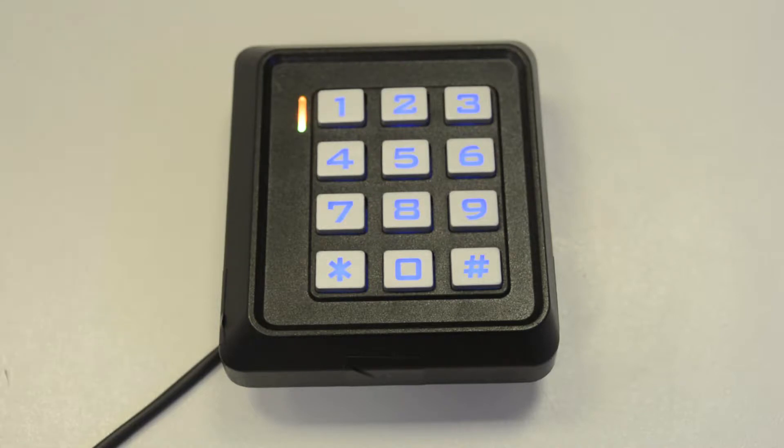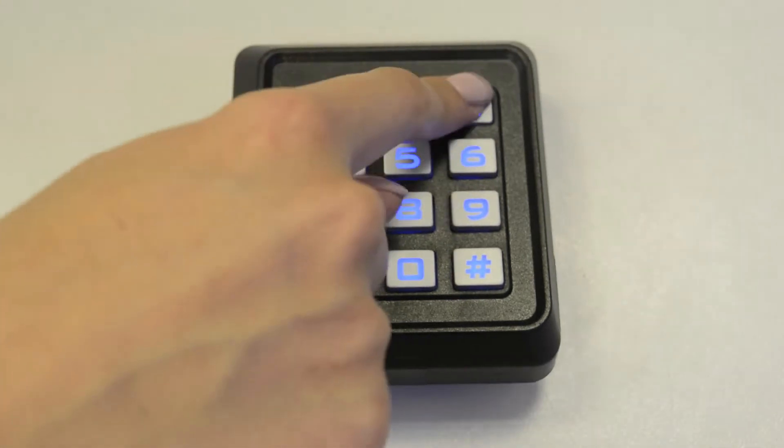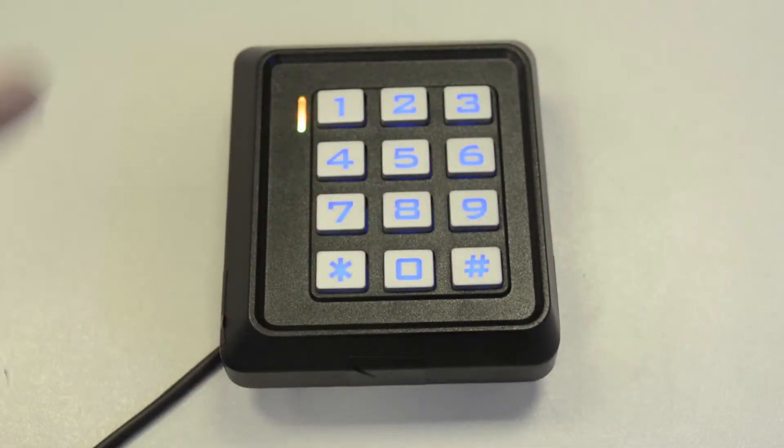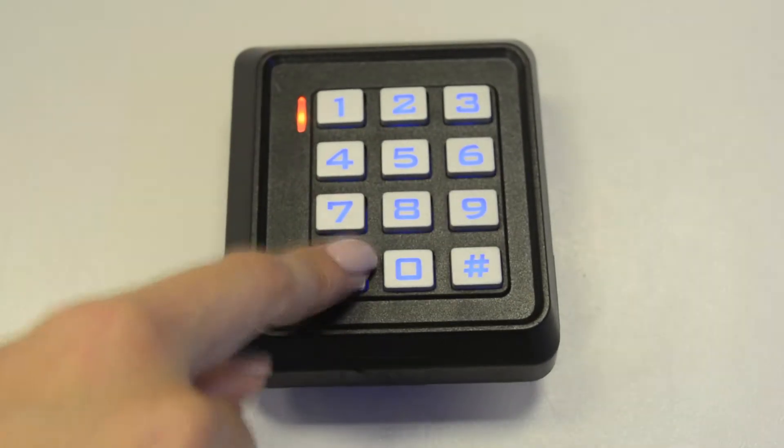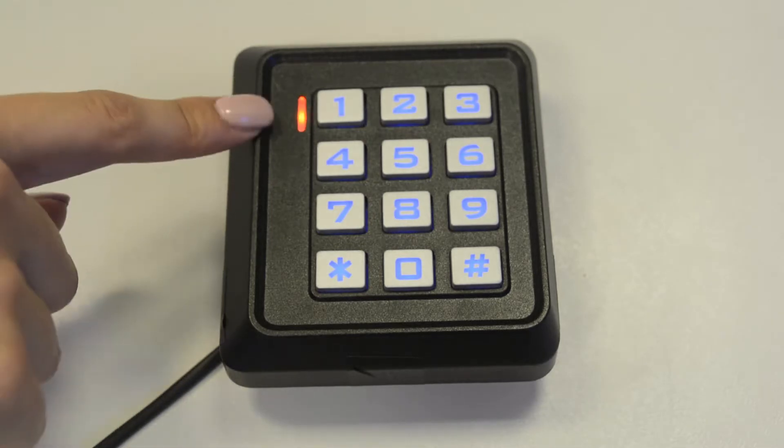And re-enter your code again, so 123456 followed by the hash key again, and then press star to exit programming mode and it'll go back to blinking red.